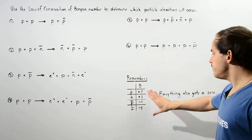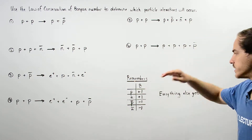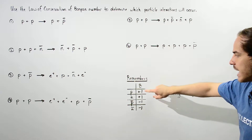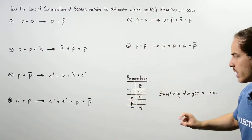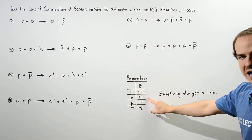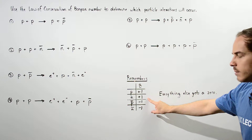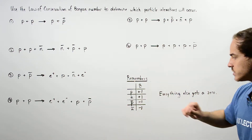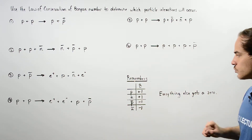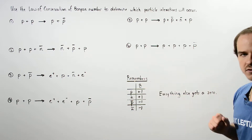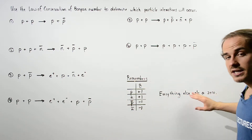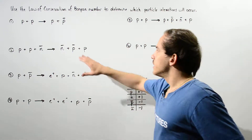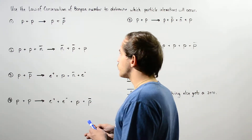We'll use the following table. This table tells us that for a proton or a neutron, the baryon number is positive one. But for their corresponding antiparticles — the antiproton and antineutron — the baryon number is negative one. Everything else gets a baryon number of zero.